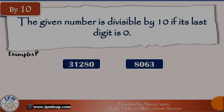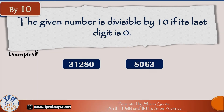The divisibility rule for 10 is a no-brainer: a number is divisible by 10 if its last digit is 0. For example, 31280 ends in 0, so yes, it is divisible by 10.